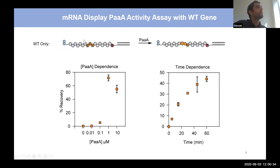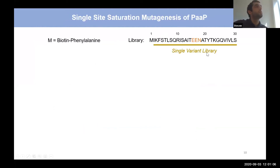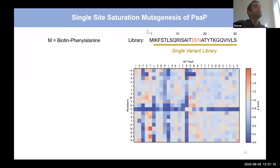To validate the assay, we displayed a wild-type gene we knew PaaA acts on, confirming it could tolerate the N-terminal biotin and C-terminal RNA tag. Running the assay and measuring streptavidin recovery showed that product recovery is dependent on PaaA concentration and incubation time, confirming the assay was working. We then purchased a single-variant library where each position had been mutated singly, ran it through our assay, and mapped the results as a heat map with the wild-type sequence on top and the different mutations below.